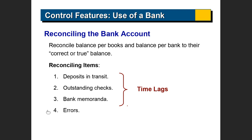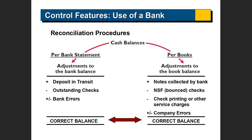Let's take a look at the format of how this is done and then an example with numbers. You start with two balances: a balance per bank statement and a balance per books. For example, on November 30th, the bank statement may show one balance and your accounting records may show another. These two numbers are almost never the same because of the timing differences in recording.